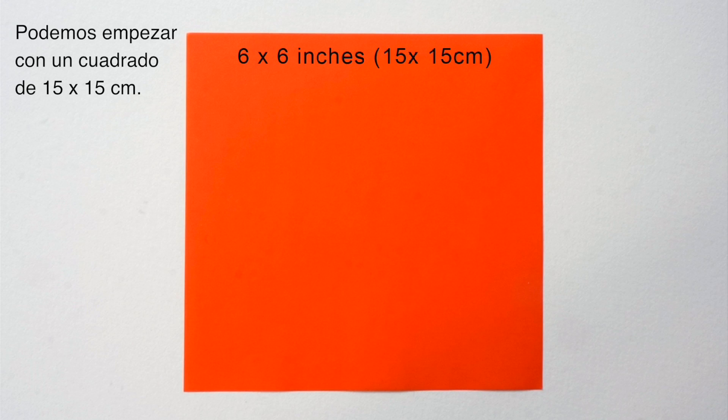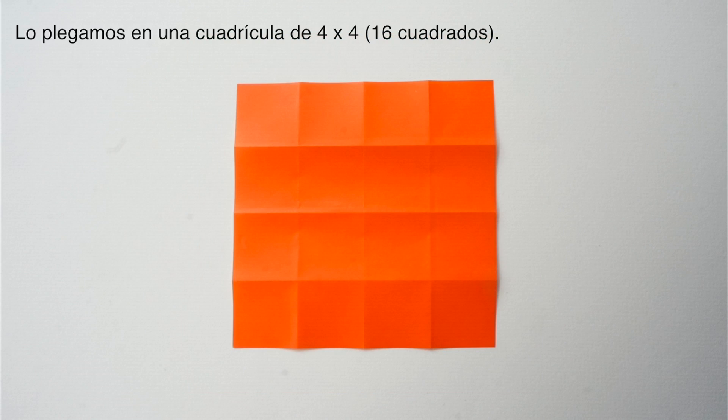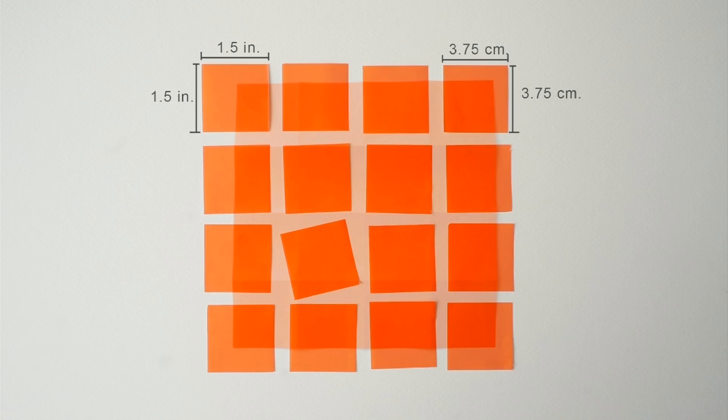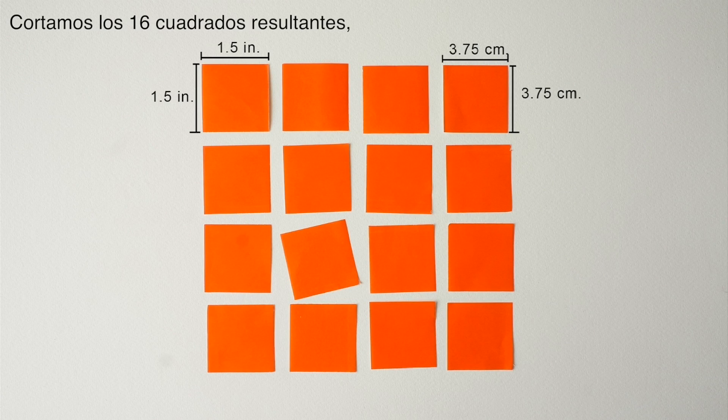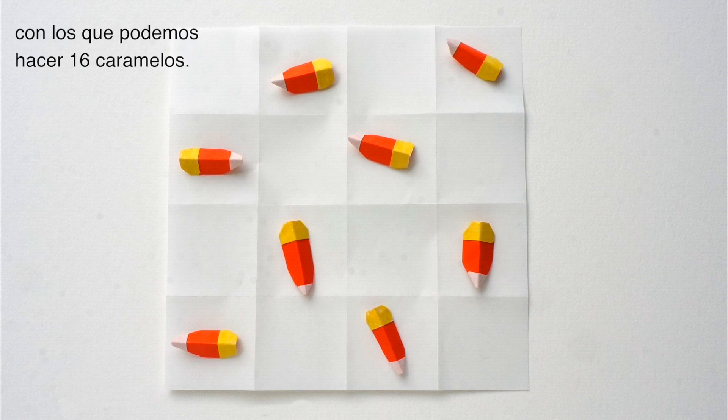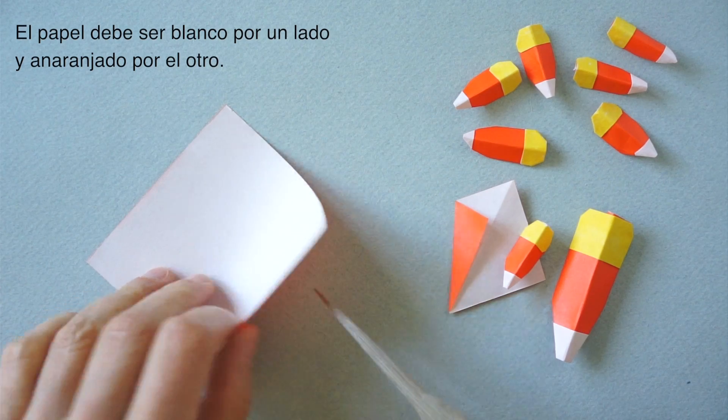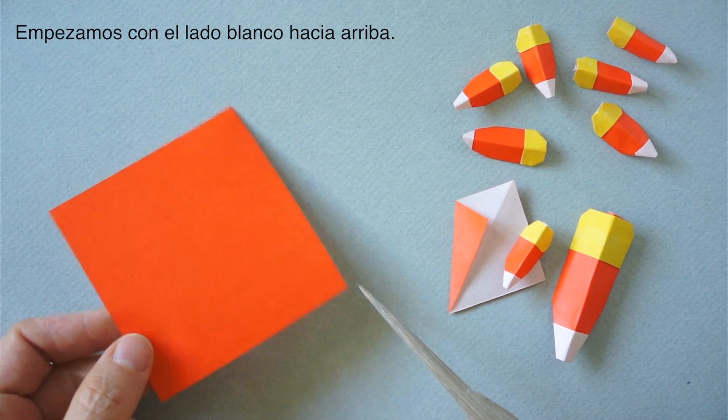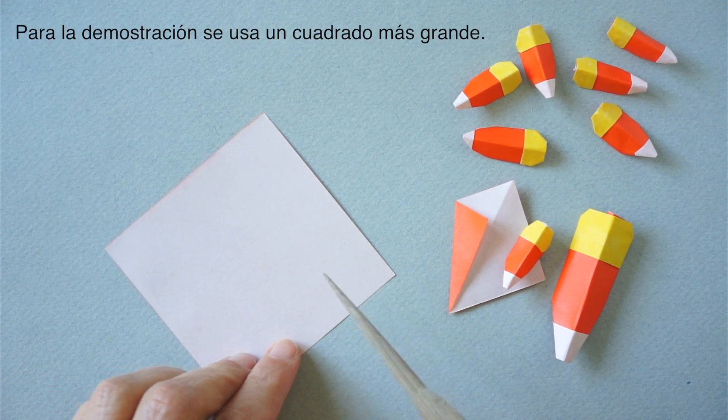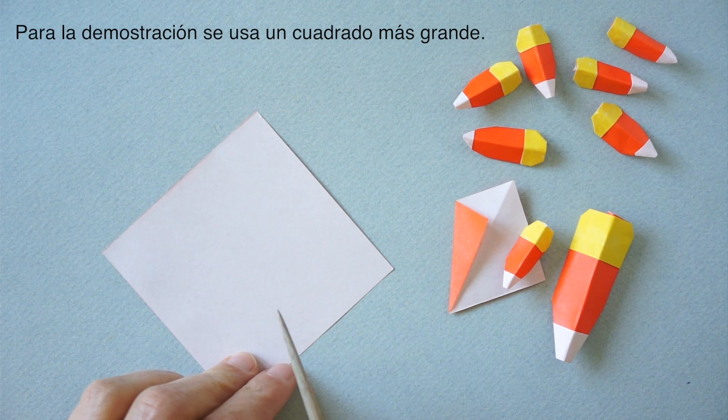We can begin with a square piece of paper 6 by 6 inches. We fold it into a 16 square grid, cut the small squares and have enough paper for 16 candy corn. The paper should be white on one side, orange on the other, and we start with the white side up. For the demonstration I use a bigger piece of paper.